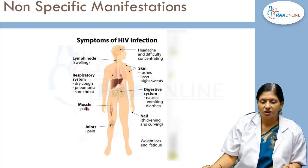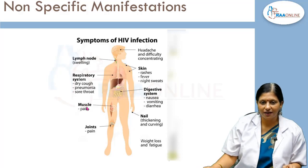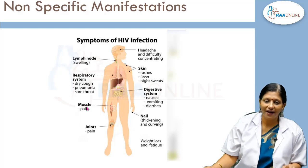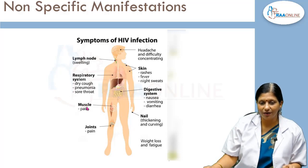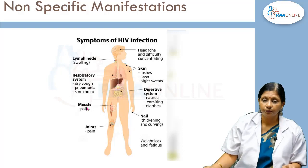The HIV-infected person can have weight loss and fatigue, and can develop lymph node swellings. Regarding the respiratory system, there can be dry cough, pneumonia, and sore throat. There can also be myalgia or muscle pain and arthralgia or joint pain.